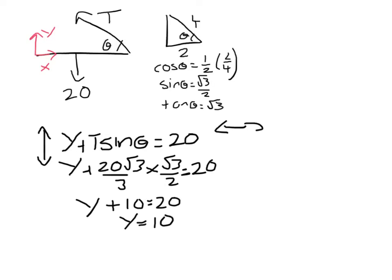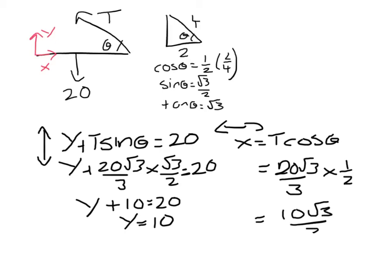If I look at the horizontal direction, then x equals T cos theta. So x is 20 root 3 over 3 multiplied by a half. So x is 10 root 3 over 3, the 2 and the 20 cancelling. So y is 10 and x is 10 root 3 over 3.